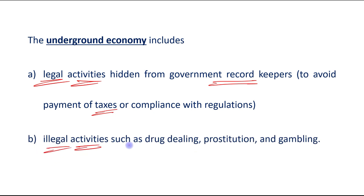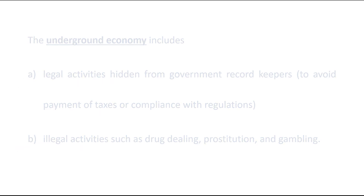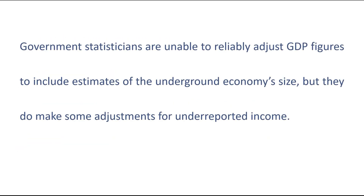Second, illegal activities such as drug dealing, prostitution, and gambling. So the underground economy includes two things: legal activities hidden from government, and illegal activities. Government statisticians are unable to reliably adjust GDP figures to include estimates of the underground economy size.